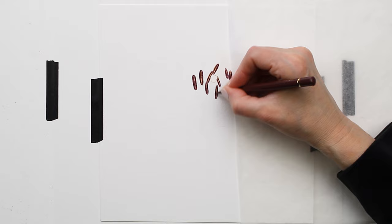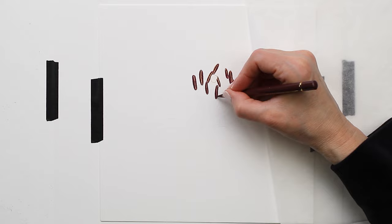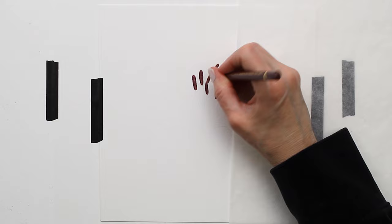I like to draw the tips of the stamens first and then make sure that each of those tips has a stem that extends down into the base of the flower.